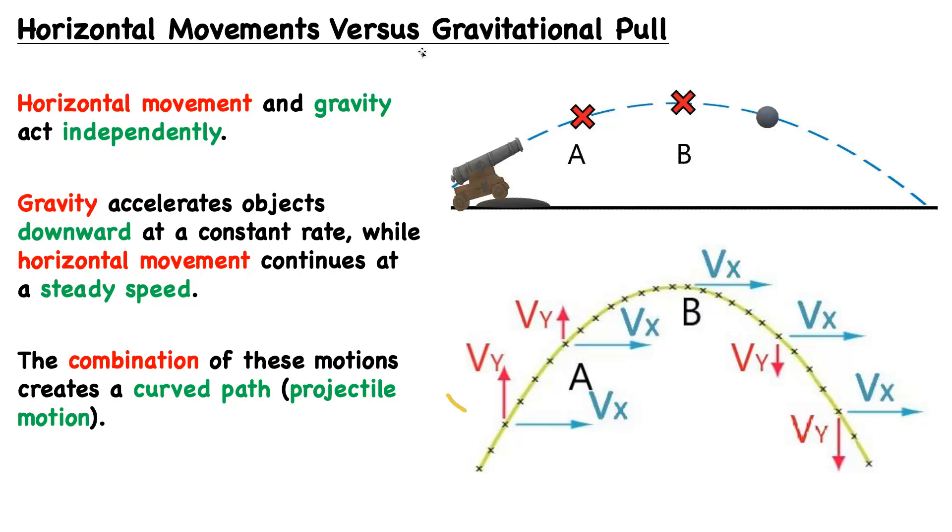But the same is not true of the y direction. Initially fired at angled upwards to some extent, it will have some larger y component. But as it works against gravity, that y component will decrease until the top of its trajectory, where it has no y component.